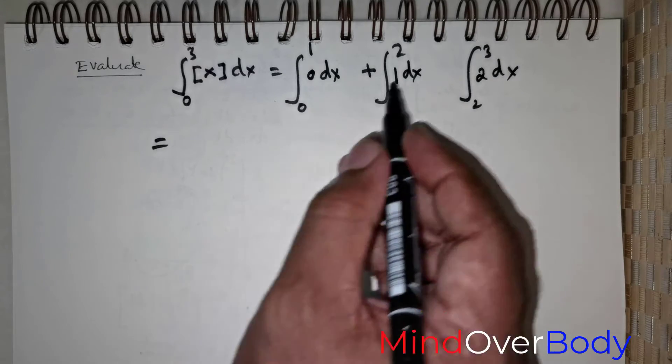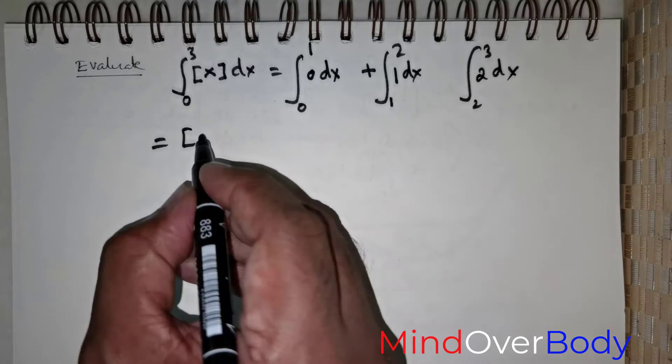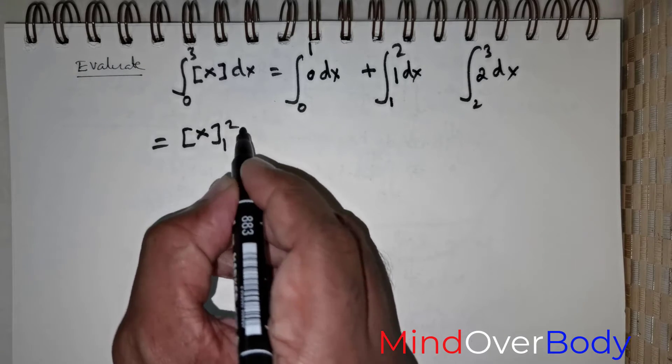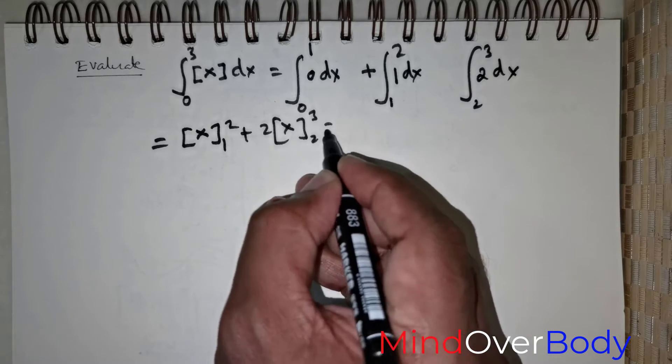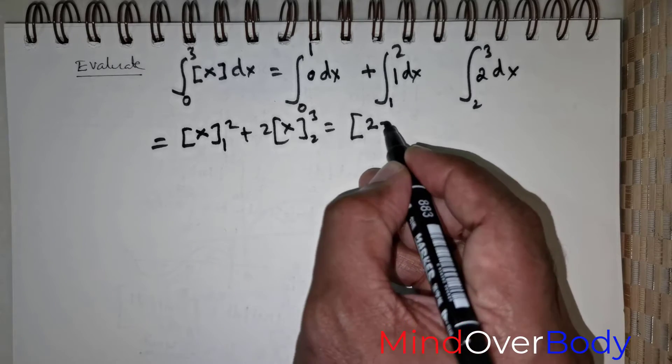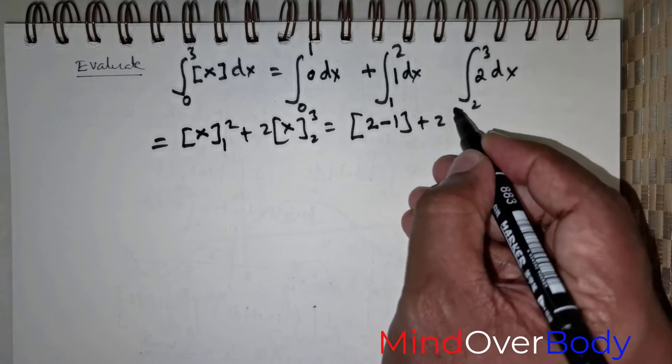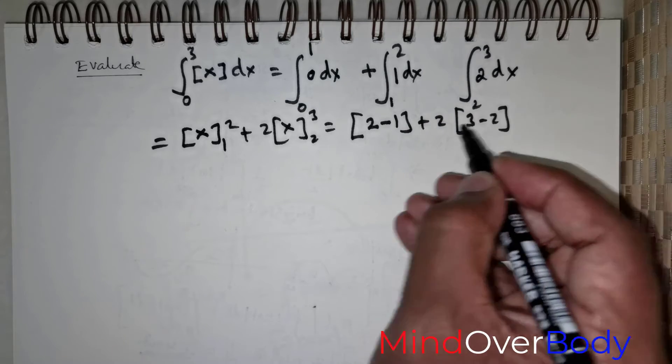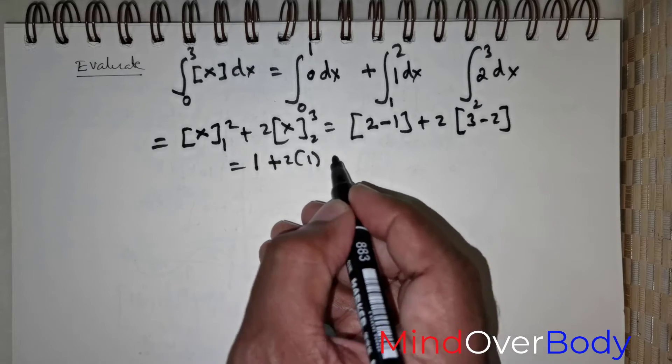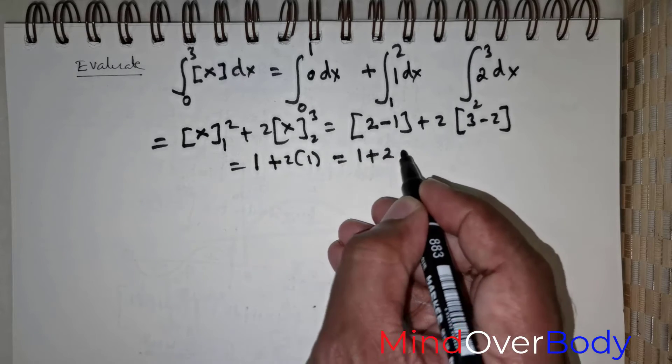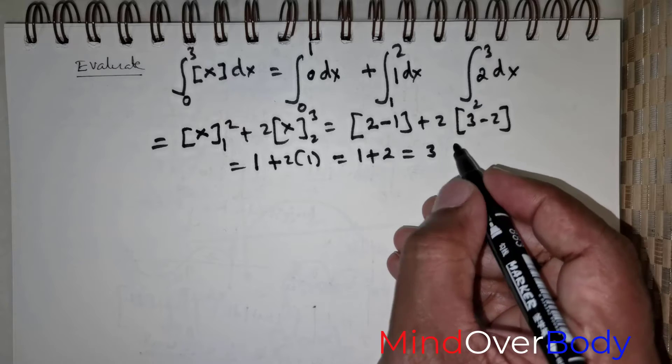Of course, this is going to be 0. And integrating this would give me x, the limits are 1 to 2. And integrating this would give me x, the limits are 2 to 3. I substitute the upper limit minus the lower limit, followed by 2 times the upper limit minus the lower limit. This is going to give me 1. This is going to be giving me 2 of 1, which is equal to 1 positive 2, which is equal to 3 units.